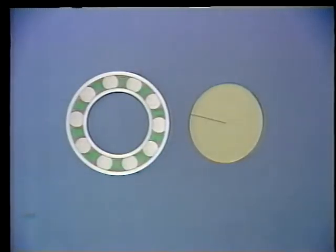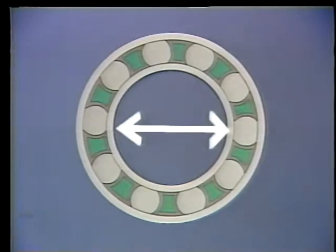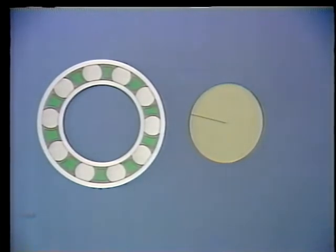Let's talk about the press fit between an inner ring and its shaft. In order for the ring to fit tightly on the shaft, its inside diameter must be slightly smaller than the outside diameter of the shaft. When the ring is installed, it must be expanded to fit over the shaft. One way this is done is by heating the bearing so that it expands. The bearing can then be slipped onto its shaft, and a press fit results as the inner ring cools down and contracts.